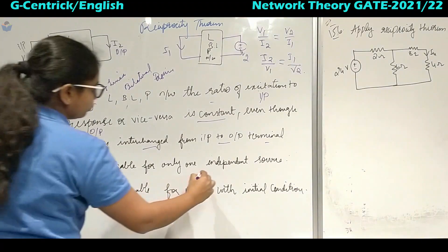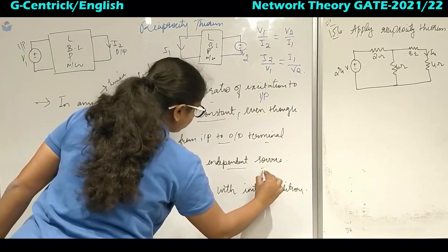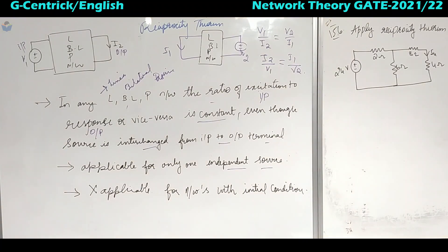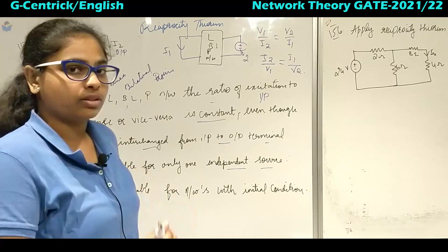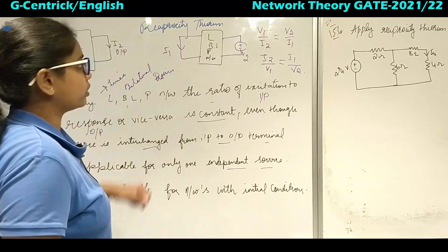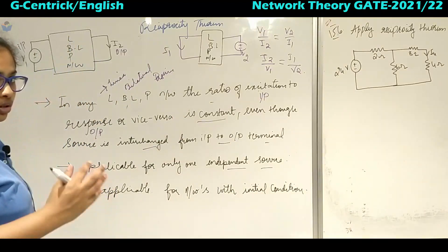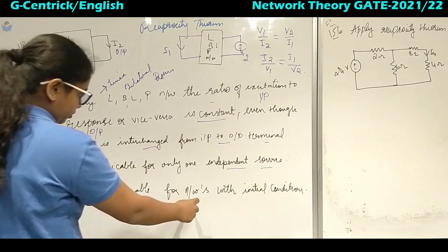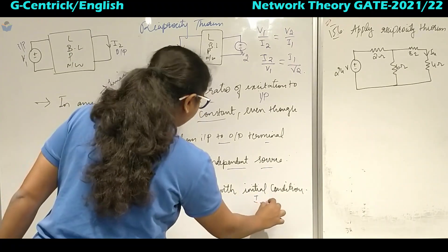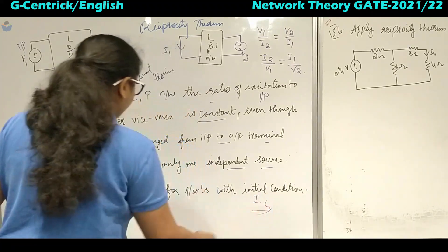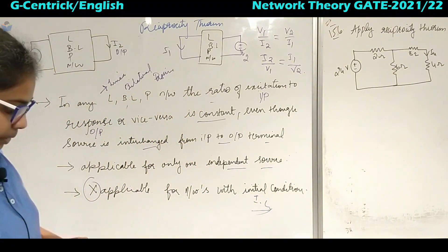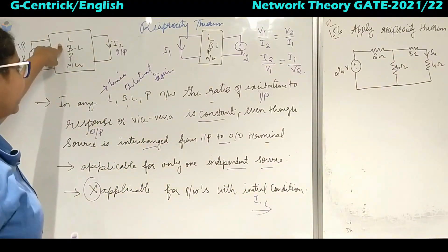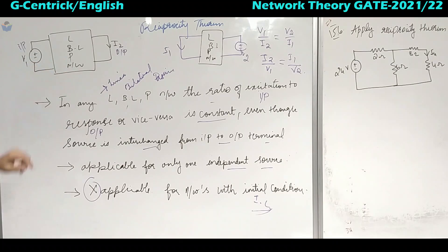This is applicable only for circuits or networks having one independent source. When two or more independent sources are present, we will see how to apply the reciprocity theorem for those circuits. It is not applicable for networks with initial conditions, because that will make it non-linear. This is applicable only for linear bilateral passive networks.